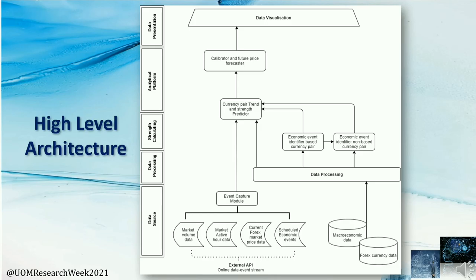In the Data Processing Layer, we process and cluster our data. In the Strength Calculating Level, we identify how different economic events affect the base currency pairs and identify the impact of economic factors on non-relevant currency pairs. In the Analytical Platform, we predict currency pair trend and strength, then calibrate and forecast future prices. Finally, we visualize the data graphically in the Data Presentation Level.